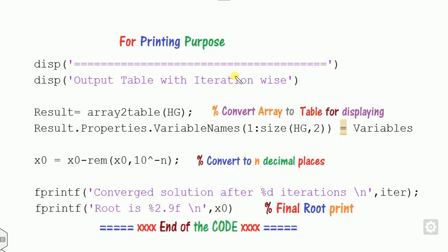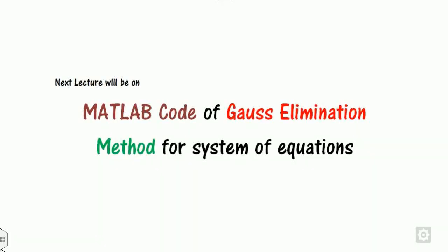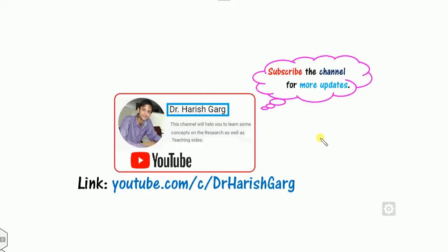This is a generalized code — you only need to change the function definition. In the next class we will see how to write the MATLAB code for Gaussian elimination. Till then, you can find other videos related to MATLAB programming on numerical methods or optimization techniques on this YouTube channel. Best of luck students, happy learning.